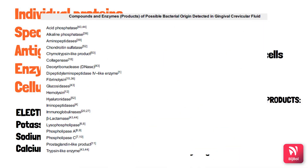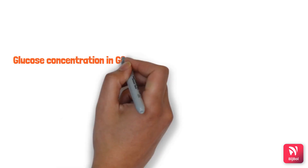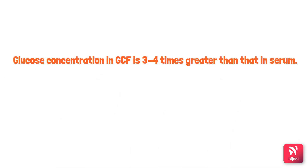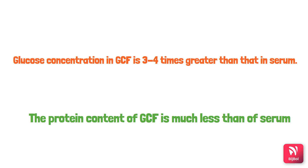Many enzymes are detected in GCF, including acid phosphatase, alkaline phosphatase, aminopeptidase, chondroitin sulfatase. Some enzymes are derived from bacteria, while others are derived from the host — so GCF contains both host and bacterial components. Glucose concentration in GCF is 3 to 4 times greater than in serum, while protein concentration is much less than that of serum.